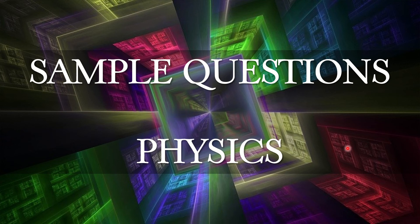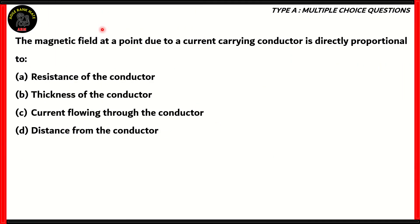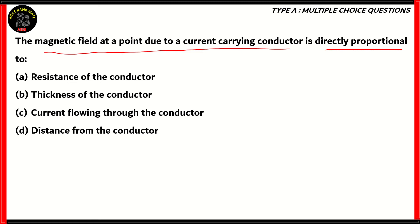Let's start off with our first question: the magnetic field at a point due to a current-carrying conductor is directly proportional to — resistance, thickness, current flowing, or distance from the conductor. Which of these is the correct option?